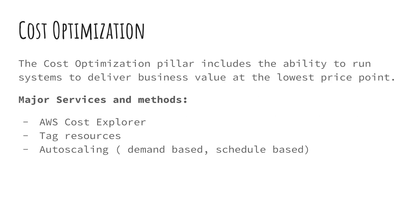Let's look at our final pillar — cost optimization. It is also a very important pillar. You want to make sure that you're not paying too much for services, which may affect your business negatively. The cost optimization pillar includes the ability to run systems to deliver business value at the lowest price point. Some of the services you can use are AWS Cost Explorer to see what's costing you money, tagging resources so you can filter by tags and separate different projects to see how much each is costing, and auto scaling to scale up and down based on demand or schedule.